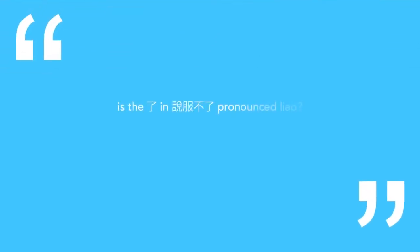Neil, on New Vocabulary Unlocked, 说服 — the 了 character, if you see it on screen here, the 了 in 说服了, pronounced 了. We do actually go over this in a later lesson, but yes, that is what happens there.